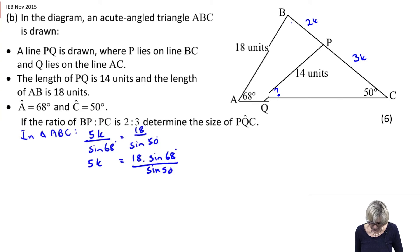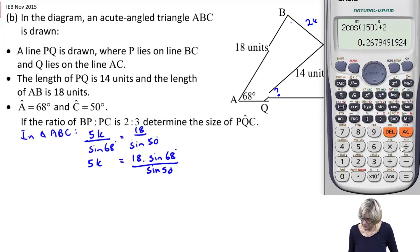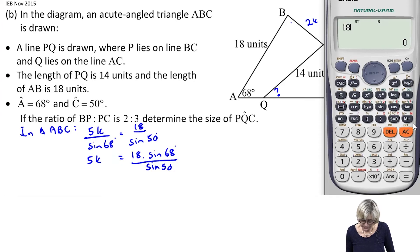I'm going to pick up my calculator and calculate it. Make sure you're in degree mode. So you've got 18 times sine 68 divided by sine 50, and I got 21.786. Now I don't want the 5, I want k, so I'm going to divide by 5.